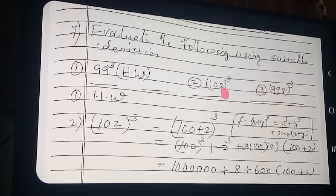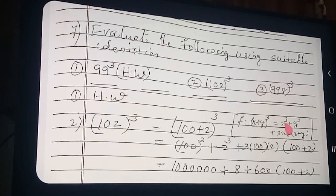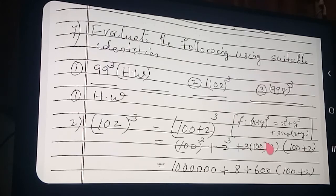This is also simply done — you don't multiply with a calculator or multiplication method, you have to do by identities. Evaluate the following using suitable identities. So 102 — how can you split it? 100 plus 2 the whole cube. Which formula will come? x plus y whole cube. What is the formula? x cube plus y cube plus 3xy into (x plus y). So: 100 cube plus 2 cube — 1st term cube plus 2nd term cube, plus 3 into 1st term into 2nd term into (1st term plus 2nd term).